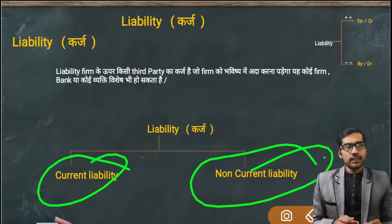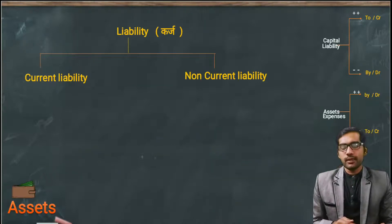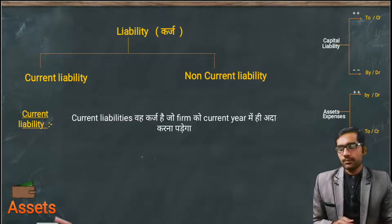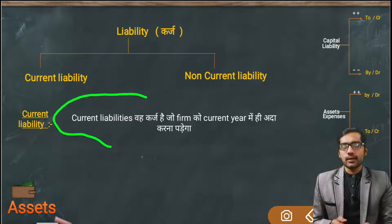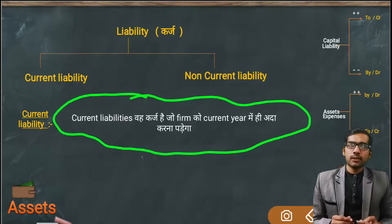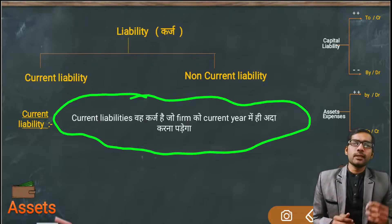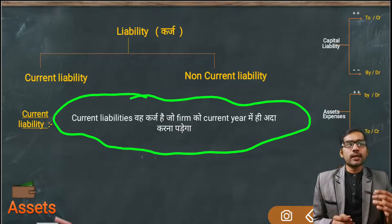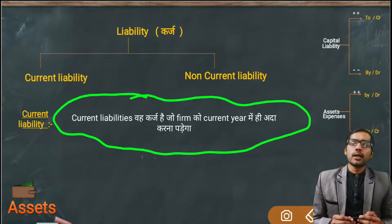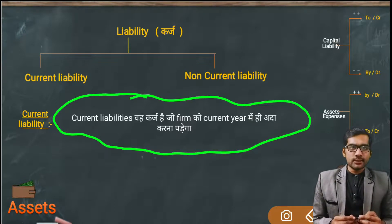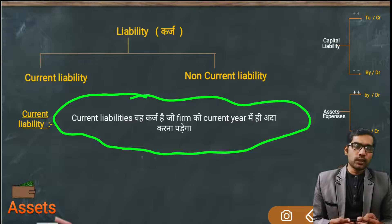When you borrow money and it has to be paid back in the current year, we call that a current liability. Current liability means the firm's obligation that must be settled in the current year.